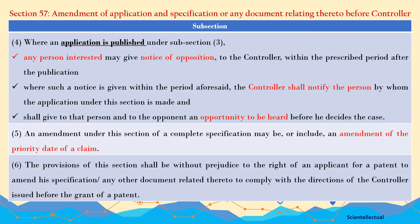Section 57, Subsection 4: When an application is published under Subsection 3, any person interested may give notice of opposition to the Controller within the prescribed period of time after the publication. When such notice is given within the prescribed time, the Controller shall notify the person who has made the application and give to that person and to the opponent an opportunity to be heard before he decides the case. For example, an applicant amends his application and any interested person gives notice of opposition that he does not want that amendment.